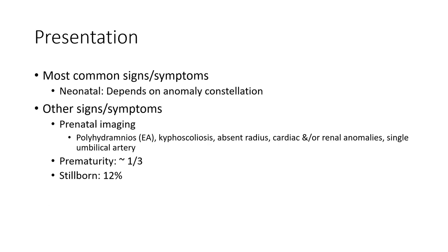Most common signs and symptoms in neonates depend on anomaly constellation. Other signs and symptoms on prenatal imaging include polyhydramnios, kyphoscoliosis, absent radius, cardiac and/or renal anomaly, single umbilical artery. Premature birth occurs in around one third of cases. Stillborn rate is 12%.